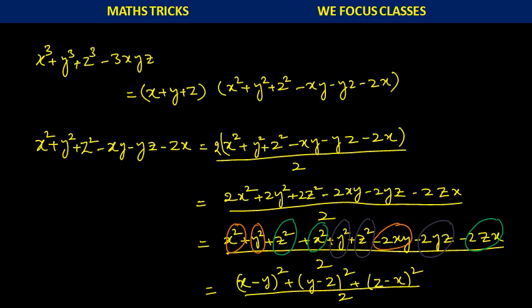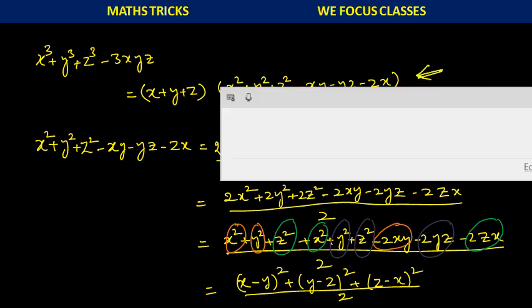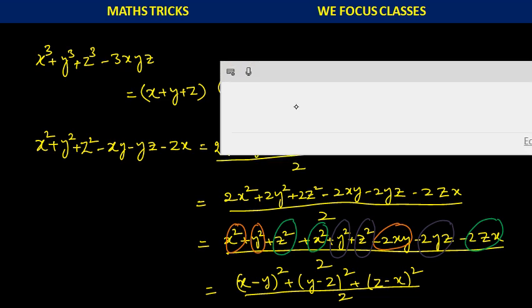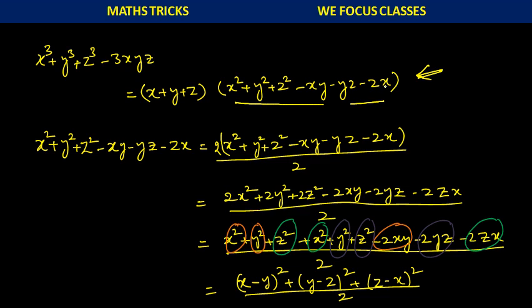What exactly is x cube plus y cube plus z cube minus 3xyz? If you formulate this, it becomes x plus y plus z, into x square plus y square plus z square minus xy minus yz minus zx. This is a lengthy expression, which is the formula for x cube plus y cube plus z cube minus 3xyz. So we need to know what is x square plus y square plus z square minus xy minus yz minus zx.